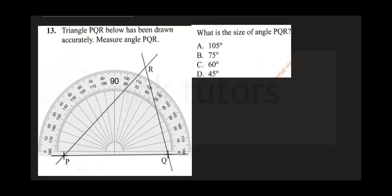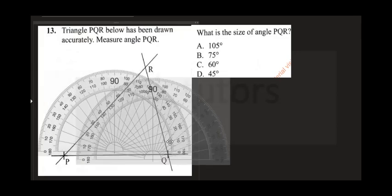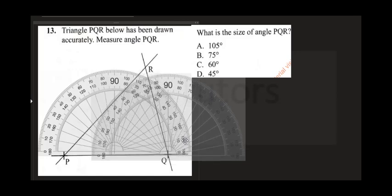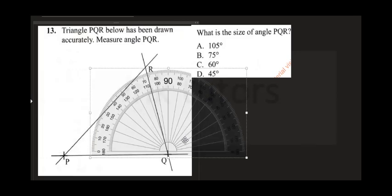Question 13 says: triangle PQR below has been drawn accurately. Measure angle PQR. This is point P, this is Q, and this is R. It is exactly this angle here that we are trying to measure. I need to shift the compass to this place. So now we want to measure angle PQR.